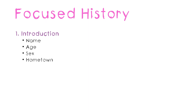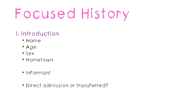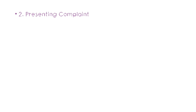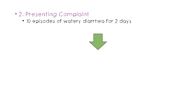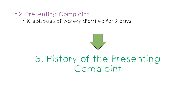If the child is small, you can mention from whom you obtained the history, usually the mother. Additionally, you can mention if the patient was transferred or is this a direct admission, just to get an idea if the patient has been treated before. After we correctly identify the patient, we mention the presenting complaint — what the patient came with. So in this case, it is 10 episodes of watery diarrhea for two days. Then we move on to the most important part of the history, which is the history of the presenting complaint.